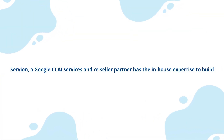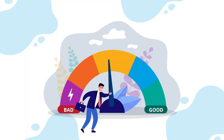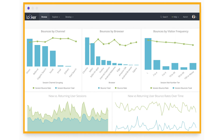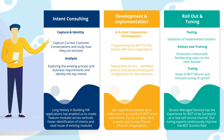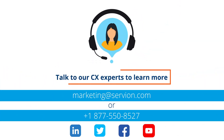Servion, a Google CCAI services and reseller partner, has the in-house expertise to build virtual bots and agent assist solutions to improve customer journeys and experience. The design process focuses on customer experience and customer effort score, leveraging Google CCAI Insights to understand bot accuracy and improvement possibilities. The process covers validating use cases, identifying intents, defining bot persona, designing conversation flow, and developing the bot with contact center integrations. Managed service offerings for continuous improvement are also available. Contact CX experts at marketing@servion.com to learn more.